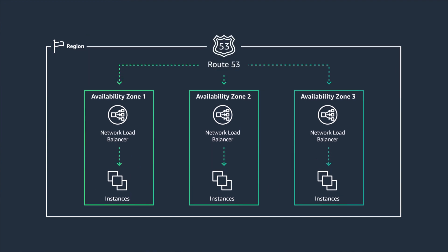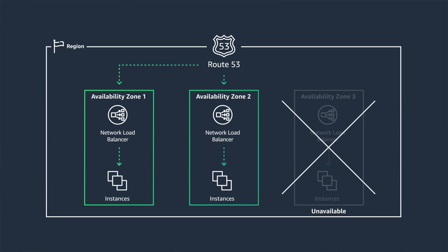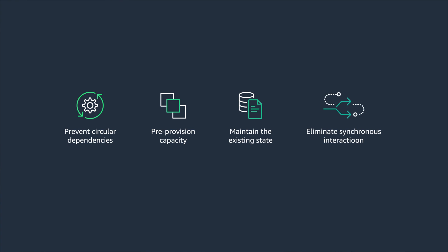You can use zonal shift with Route 53 Application Recovery Controller to isolate and avoid the AZ with the failure. When you start a zonal shift, traffic will start to drain away from the AZ you want to avoid and then stop entirely. You don't have to spend time looking at logs trying to figure out what the problem is — you simply shift it away using the data plane. Eventually, you figure out what the issue is and cancel the zone shift. Things go back to normal again. You assumed any gray failure to be a hard failure, isolated the issue, and used data plane actions to recover.